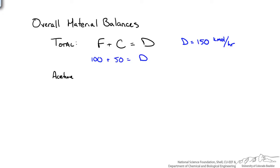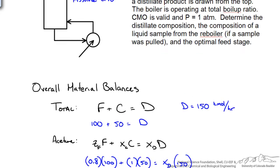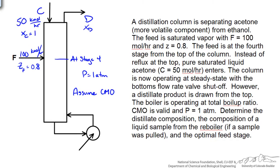An acetone balance can be written as such. We can plug in information we know. We see we have one unknown and we can solve for our distillate composition and get 0.87. So let's go back to the problem statement. We have determined the distillate composition as 0.87.